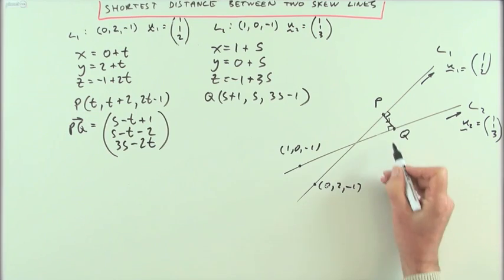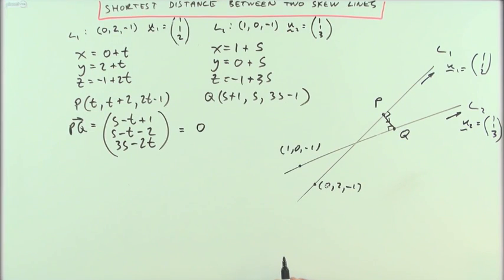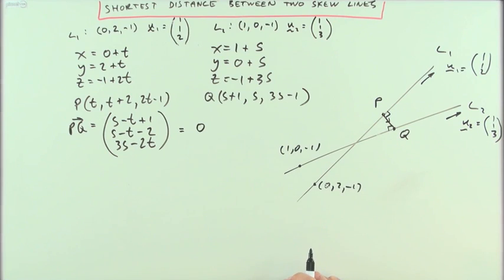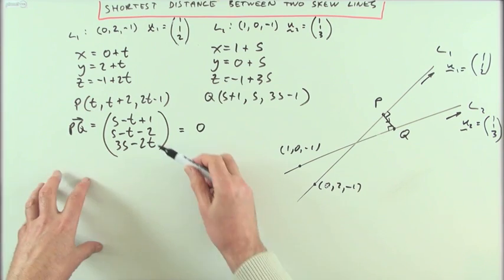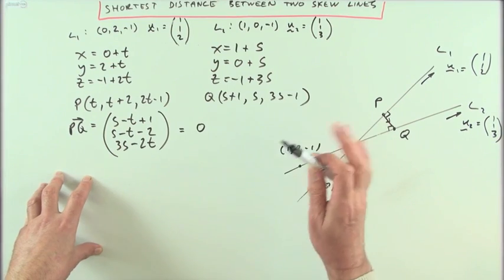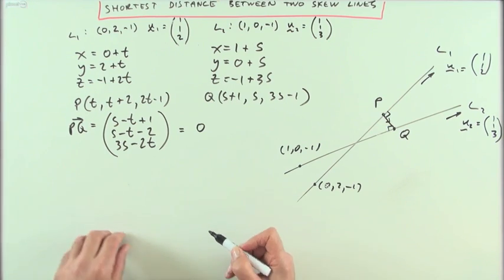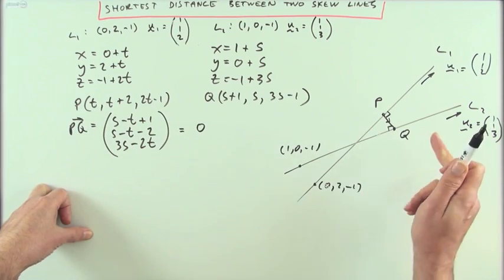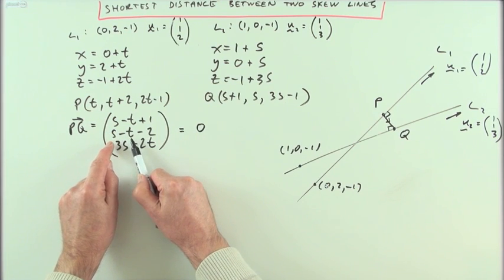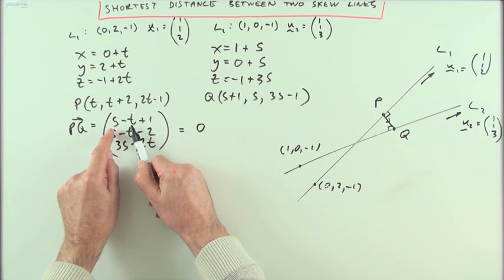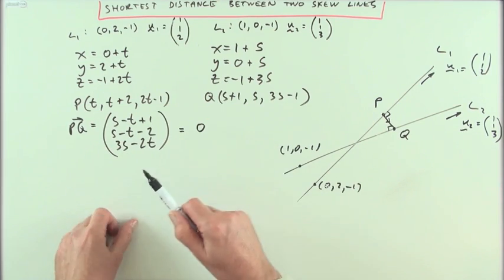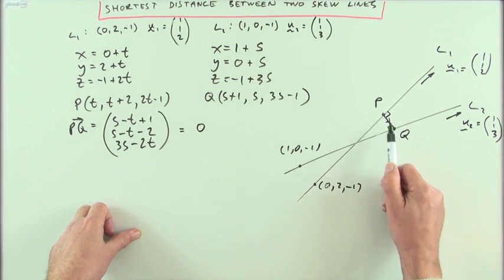A small note: if this vector ever equals zero for some values of S and T, the lines would intersect and that would give the point of intersection. But that requires all three equations to be satisfied simultaneously. I can see straight away this won't happen here, because the first component requires S - T = -1 and the second requires S - T = 2 — those aren't consistent. So these lines don't intersect; they are in fact skew, and there will be some shortest distance.